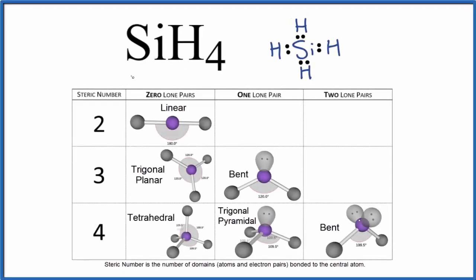Let's take a look at the molecular geometry for SiH4. This is silicon tetrahydride. So the first thing we need to do when we look at the molecular geometry for a molecule, we need a Lewis structure to understand how many pairs of electrons we have between atoms and then if we have lone pairs.